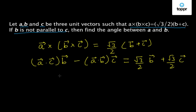So, the coefficient of B on the left hand side is A dot C and this will be equal to the coefficient of B on the right hand side that is equal to root 3 by 2. Similarly, the coefficient of C on the left hand side is equal to minus A dot B and this is equal to the coefficient of C on the right hand side that is equal to root 3 by 2.